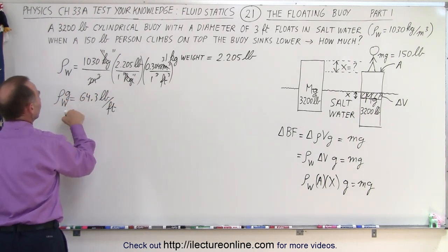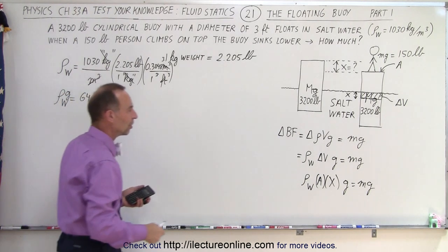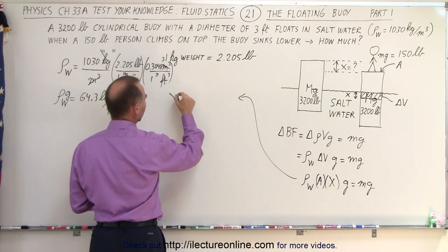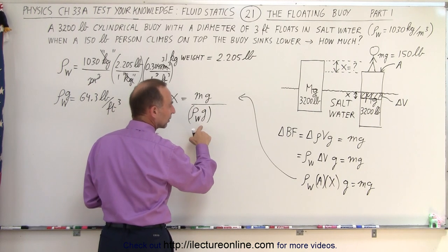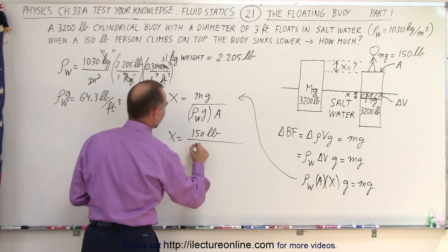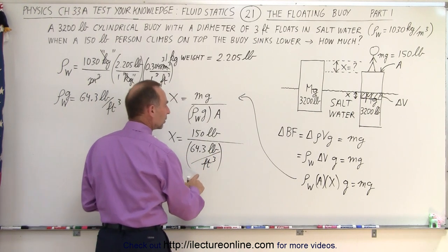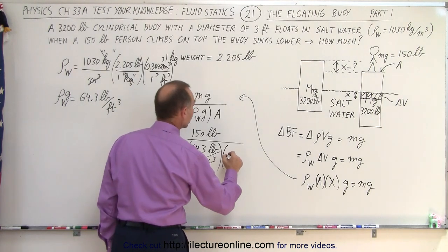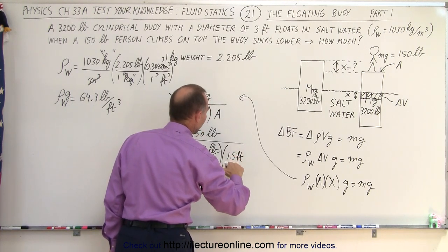Now we can solve for x. We have x equal to the weight of the person divided by the weight density of water times the cross-sectional area. So x = 150 pounds divided by 64.3 pounds per cubic foot, divided by the cross-sectional area. The cross-sectional area equals pi times r squared, where the radius is half the diameter — 1.5 feet.